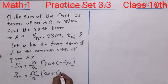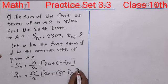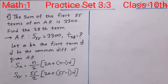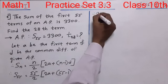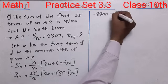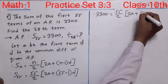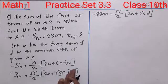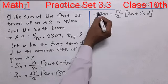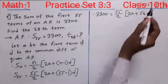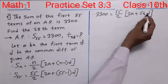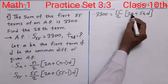We cannot put values of A and D because they are not given. Now we put the value of S55, which is 3300: 3300 equals 55 upon 2 in square bracket 2A plus 54D. We can also take 2 as a common factor from the bracket 2A plus 54D, giving 55 upon 2 multiplied by 2, with A plus 27D remaining inside.